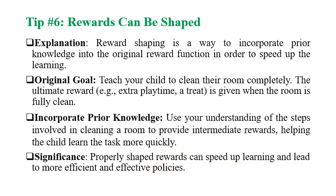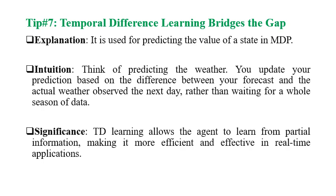Properly shaping the reward can speed up learning and lead to a more efficient and effective policy. Temporal difference is used for predicting the value of a state in a Markov decision process. Think of predicting the weather: you update your prediction based on the difference between your forecast and the actual weather observed the next day.